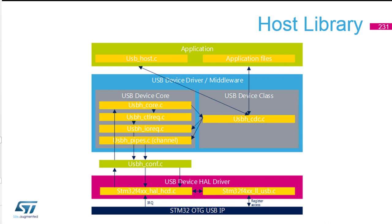If we want any kind of data or to start reception, we need to go to the IO request and to the pipes. The middleware layers are connected through the USB host configuration file, where we have the settings for number of endpoints, peripheral settings, GPIO interrupt settings, and so on, down to the HAL drivers.